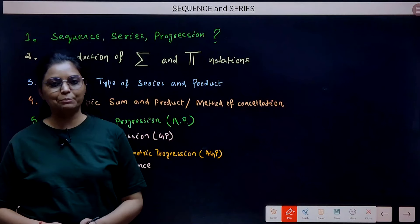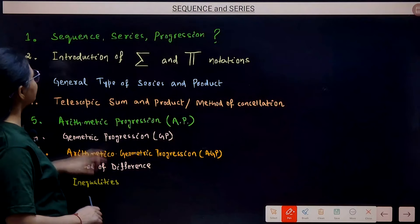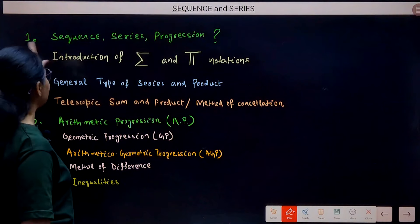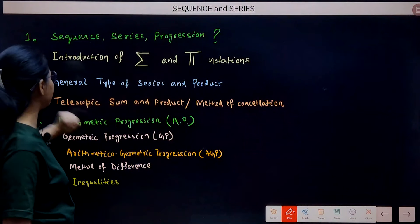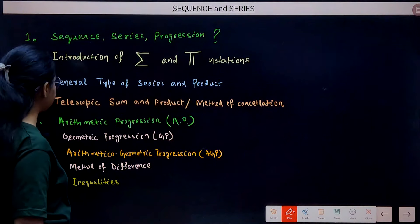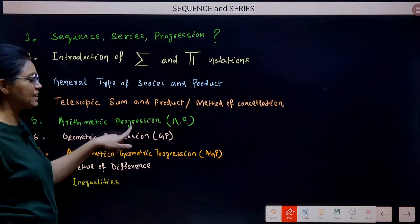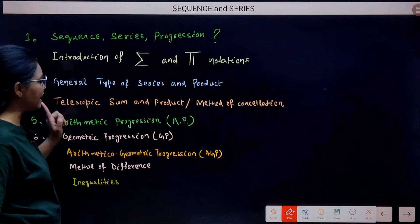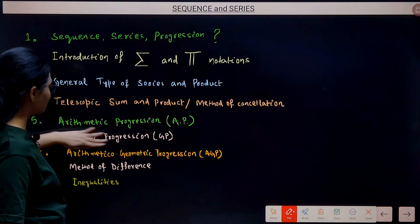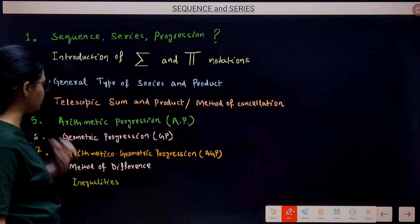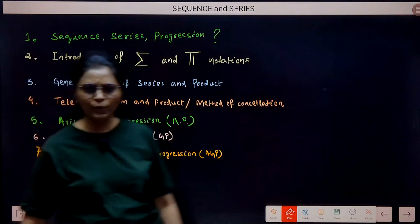Hello students, today we are going to start with a new chapter: Sequence and Series — a very important chapter. The topics we will cover include: introduction of sequence, series and progression; introduction of sigma and pi notations; general type of series and product; telescopic sum and product (solved by method of cancellation); arithmetic progression (AP); geometric progression (GP); harmonic progression has been removed from JEE Main and JEE Advanced syllabus; arithmetic-geometric progression (AGP); method of difference; and inequalities.